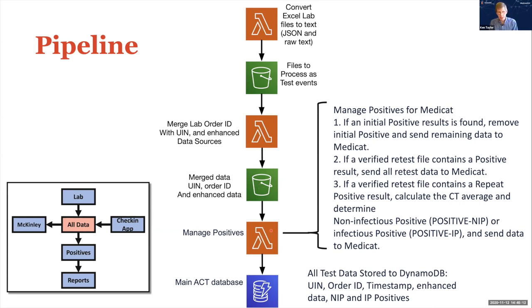Now it's time to manage the data. We look especially at the positive results. If we see an initial positive result, we remove it from the initial file and send it to the McKinley database, called MediCat. If we get a retest file with a positive result, we send all that data to MediCat as well. We look at the gene values of the repeat positive tests and determine whether this person is now a non-infectious positive or an infectious positive. If non-infectious, you can return to campus; if still infectious, you go back into quarantine.